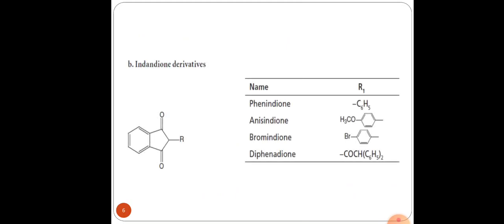Coming to the second class that is indandione derivatives. At the left side, the general structure represents the indandione moiety where you can see the benzene ring is fused with the five-membered cyclic ring system which is having at the first and the third place the ketonic moiety attached and at the second place where we are representing it with the R substitution. Based on the different substitution, the different indandione derivatives exist. Under that few examples are phenindione, anisindione, bromindione, diphenindione. So, these are the few drugs based on the substitution at the R you can see these indandione derivatives exist.